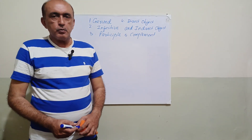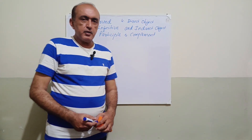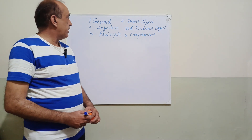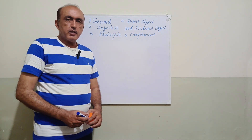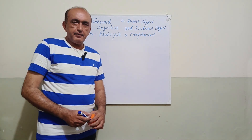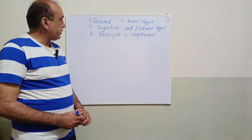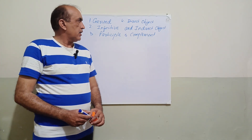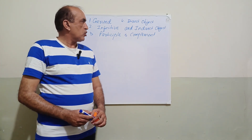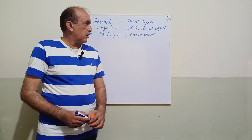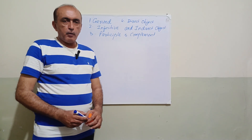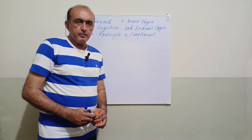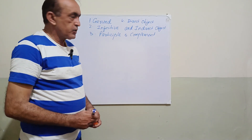Today we are going to learn about these words. First one is gerund. The second one is infinitive. Third one is participle. Fourth one is direct object and indirect object. And fifth one is complement. Let us start from the first one.